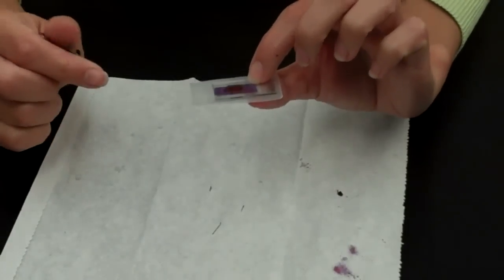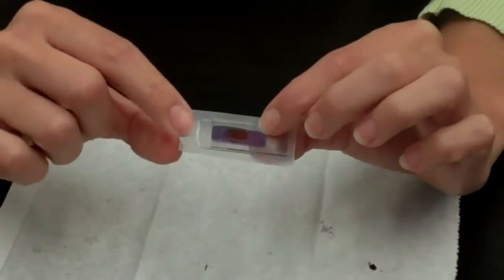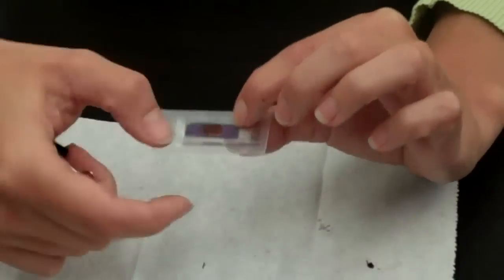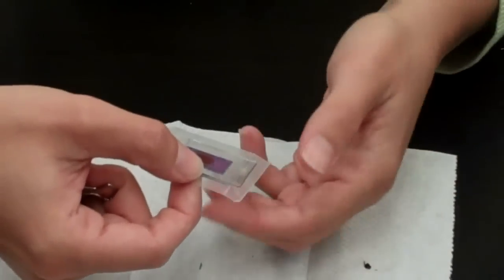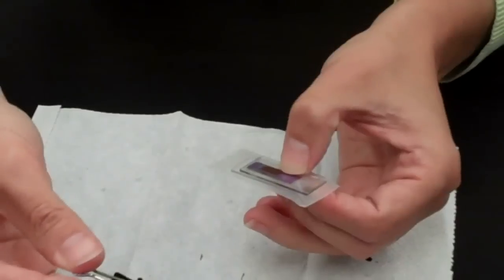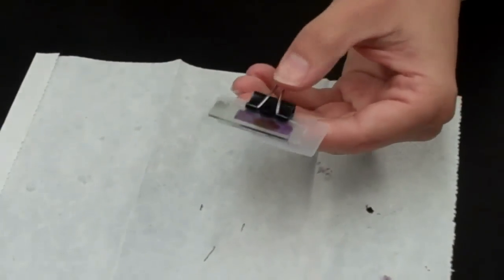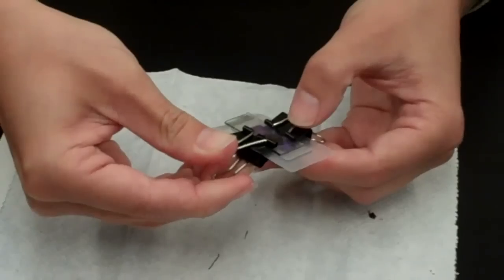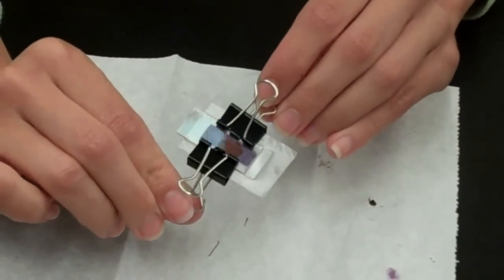To hold the solar cell together, you'll put the binder clips on. As you can see, we've left an area of space here and here on the short edges. That's important for the multimeter. It's easiest to put one on the long end and the other on the long end. Your completed solar cell should look like this.